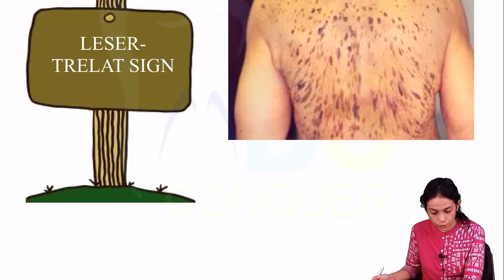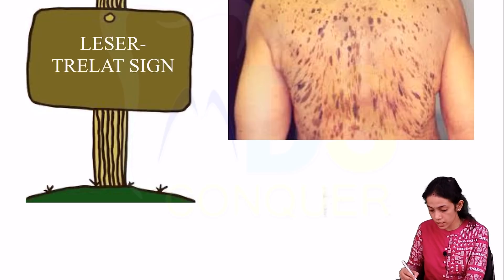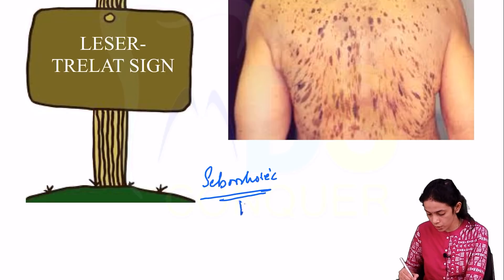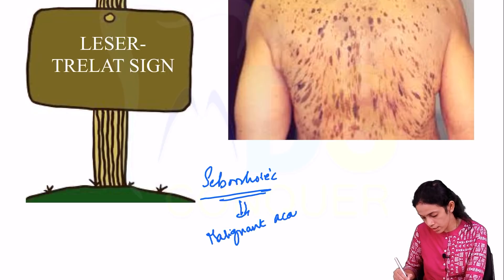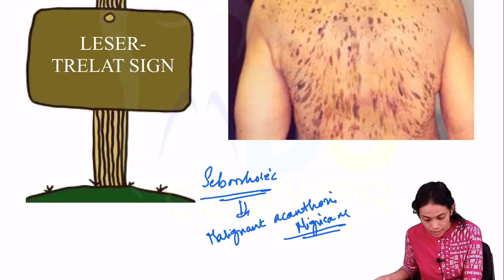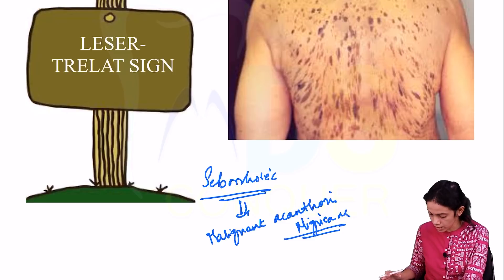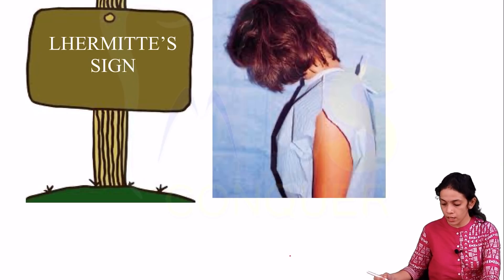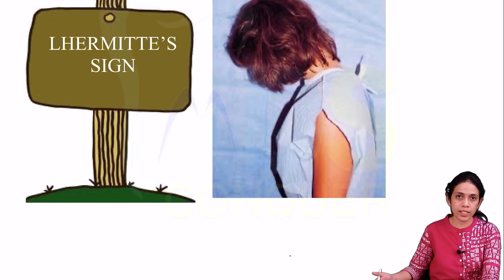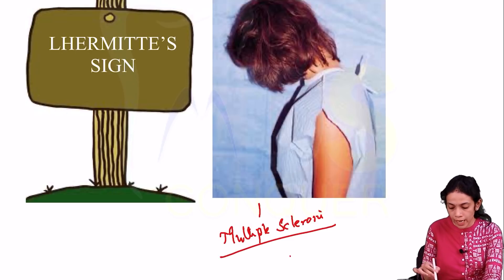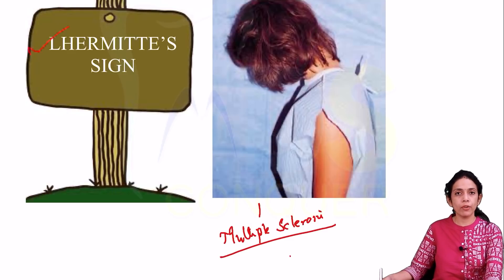Next is the Leser-Trélat sign — sudden abrupt appearance of seborrheic eruptions on the skin that increase in number, seen with malignant acanthosis nigricans. Next is the Lhermitte's sign, where patients have an electric shock-like sensation on flexion of the neck, seen with multiple sclerosis. Note: the 'L' is silent.